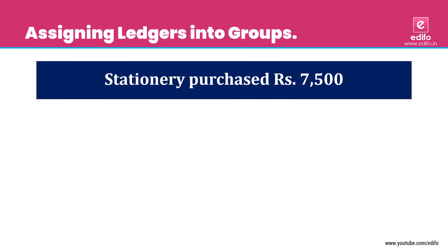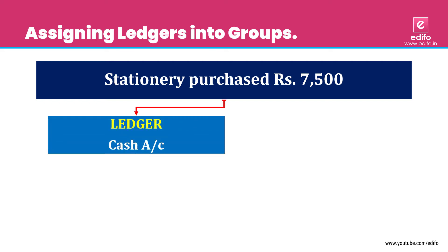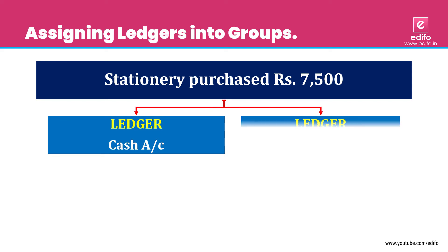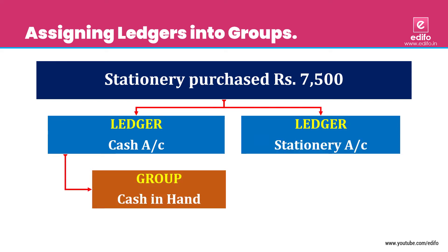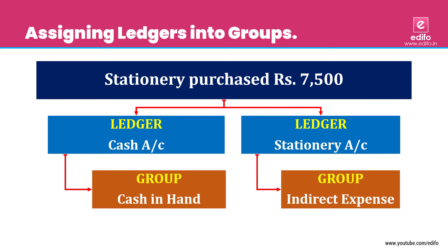Next transaction: stationery purchased, rupees 7,500. The outflow aspect is cash and the inflow aspect is stationery to the organization. Two aspects: cash account and stationery account. Cash account is related to 'Cash in Hand' and stationery account is related to 'Indirect Expense' group. It will appear in the P&L account.